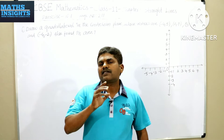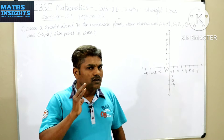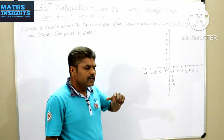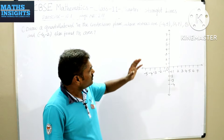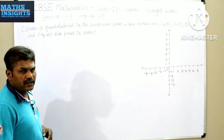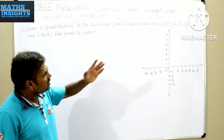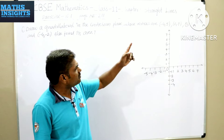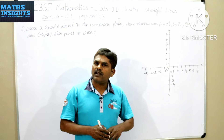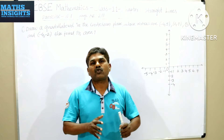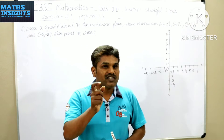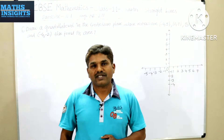If you take the graph paper, the scale is 1 centimeter equals 1 unit on the x-axis. Similarly, for the y-coordinates — 5, 7, minus 5, and minus 2 — the minimum value is minus 5 and the maximum value is 7. You can show these values on the graph paper without changing the scale, where 1 centimeter equals 1 unit.